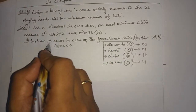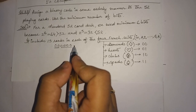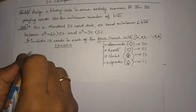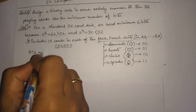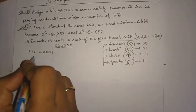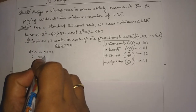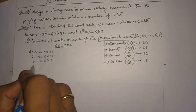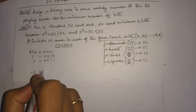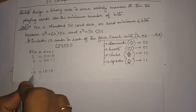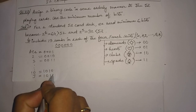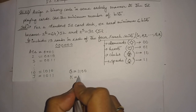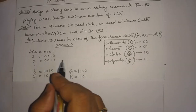We now assign the 13 ranks to the 4 least significant bits. Ace is assigned 0001, 2 is 0010, 3 is 0011, and so on, up to 10 which is 1010. Then Jack is 1011, Queen is 1100, and King is 1101. This will be the complete representation.